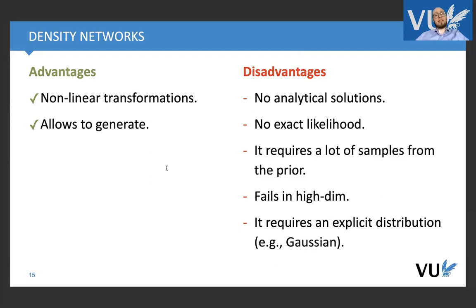But it's not analytical of course, no exact likelihood because we must approximate it, it requires a lot of samples from the prior, and that's why it fails in high dimensional problems, and also it requires some explicit distribution, so again we are not so maybe flexible, right?